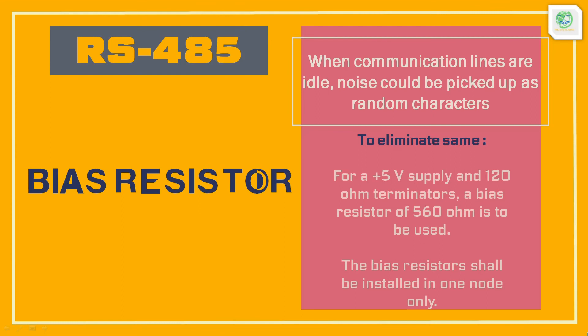During normal operation, there are some periods when all RS-485 drivers are off and the communication lines are in an idle state. In this condition, the lines may pick up noise, which will be interpreted as random characters on the communication line. To solve this problem, we should incorporate bias resistors. For a +5 volt supply and 120 ohm terminators, a bias resistor value of 560 ohm is sufficient. The bias resistors are to be installed on one node only.